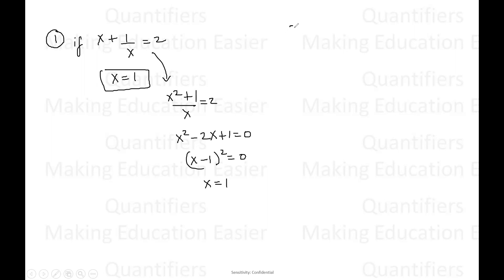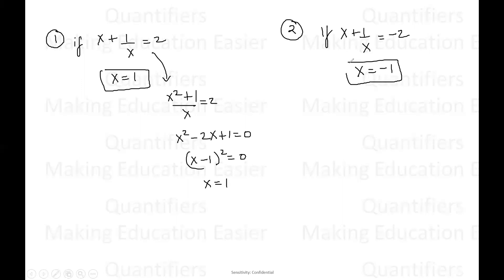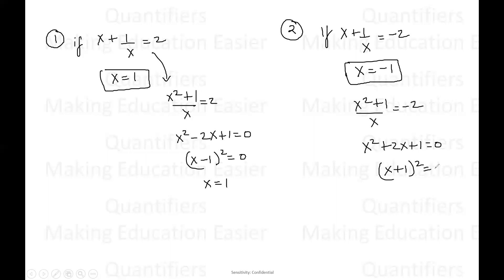Now let us see the second result, which is also very similar to the first one. If it is given that X plus one by X is equal to negative two, then X will be equal to negative one. The original equation can be written as X squared plus one, whole divided by X, is equal to negative two, which can be written as X squared plus two times X plus one is equal to zero. So we have X plus one whole squared equals zero, which gives X is equal to negative one.